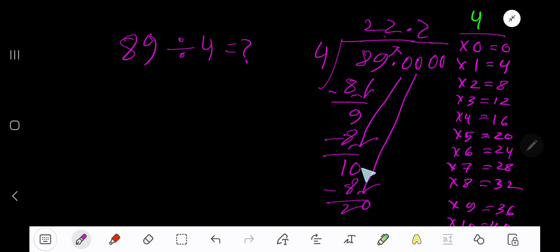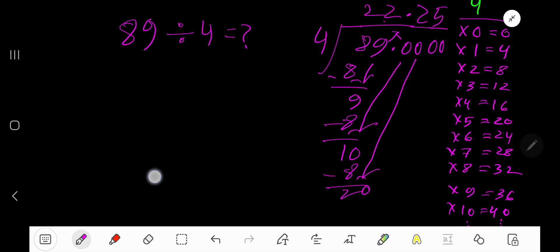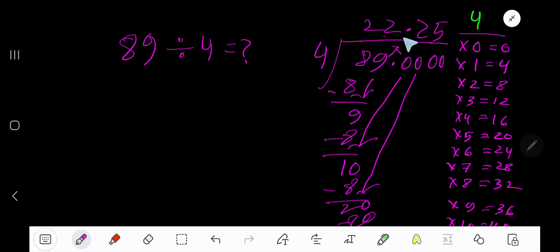Bring down another zero. 4 goes into 20. How many times? 4 goes into 20, 5 times. Write 5. 5 times 4, which is 20. Subtract 0. Our answer is 22.25.